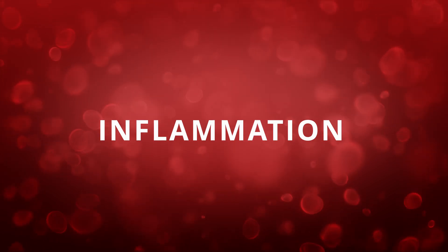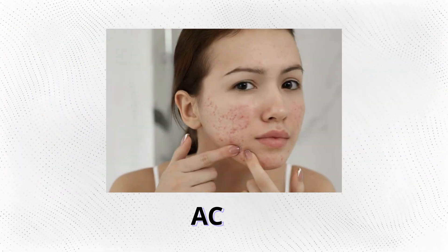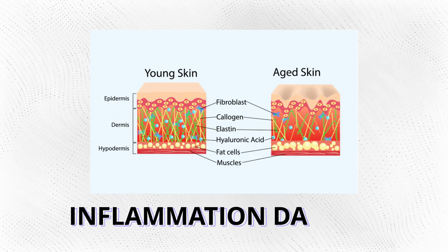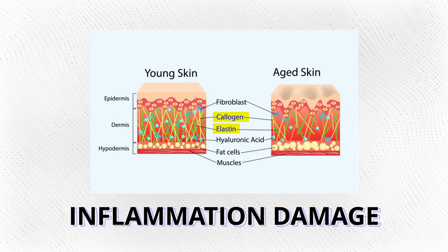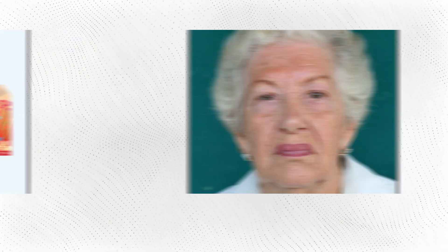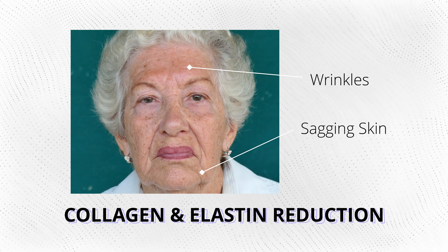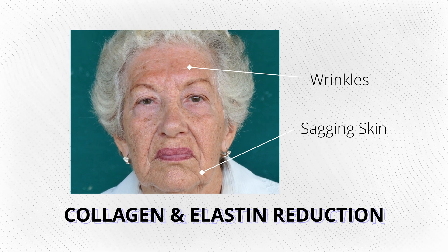The third reason alcohol causes accelerated aging is through inflammation. Alcohol can increase inflammation in the body, which can lead to a variety of problems within the skin, such as redness, puffiness, and acne. In addition, inflammation can also result in damage to the collagen and elastin within the skin. These compounds play a crucial role in skin firmness and elasticity, and a reduction in them can lead to wrinkles, sagging skin, and an overall aged appearance.